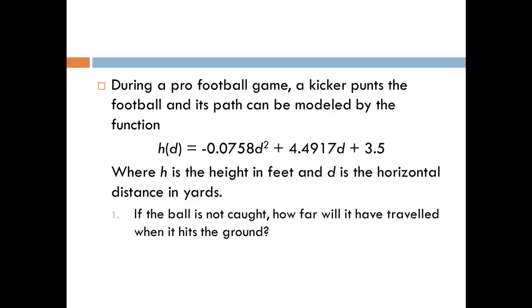If the ball is not caught, how far will it have traveled when it hits the ground? Since we are looking at when the ball hits the ground, that means h = 0. So if we put zero in for h, we have 0 = -0.0758d² + 4.4917d + 3.5.